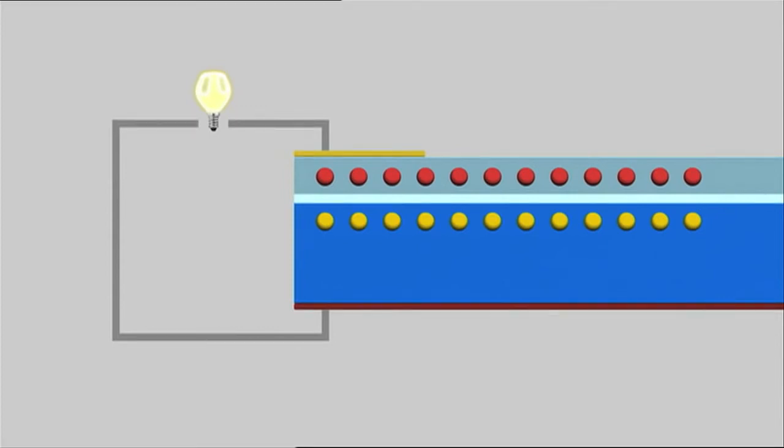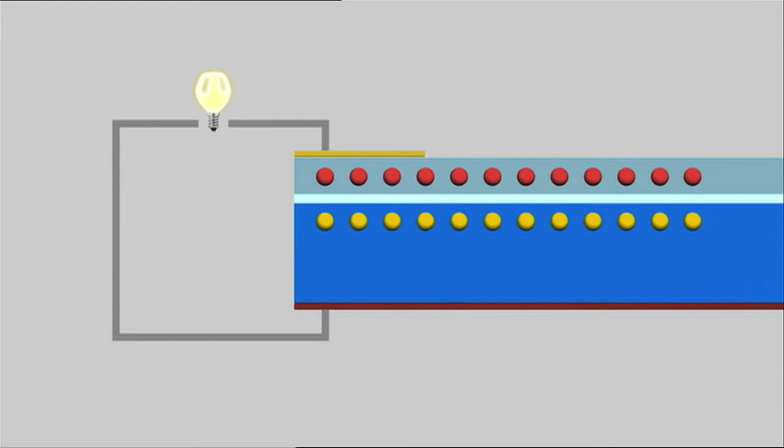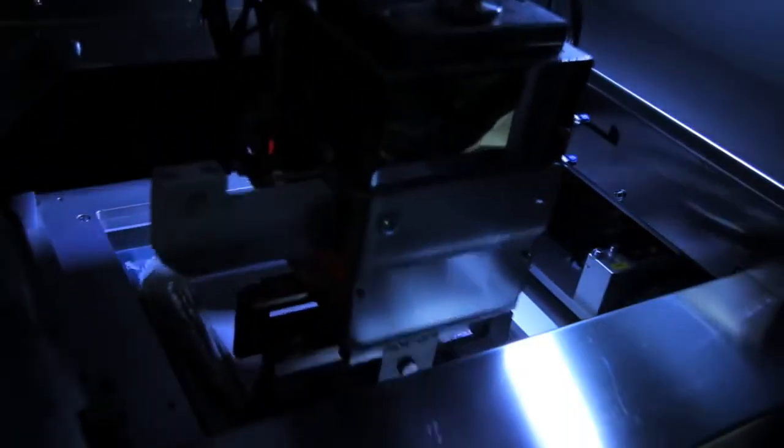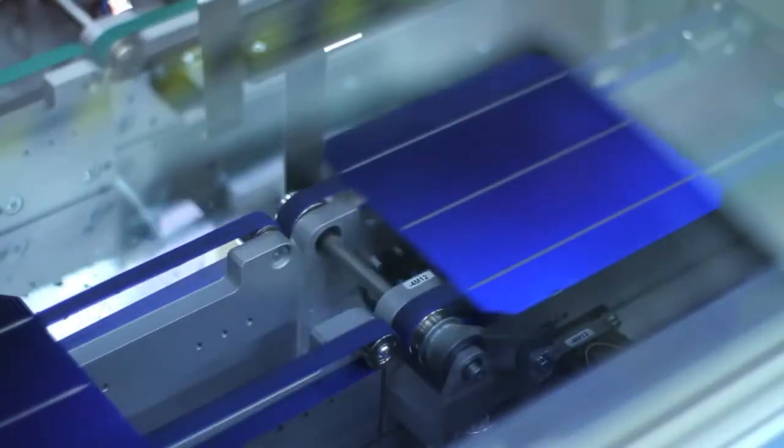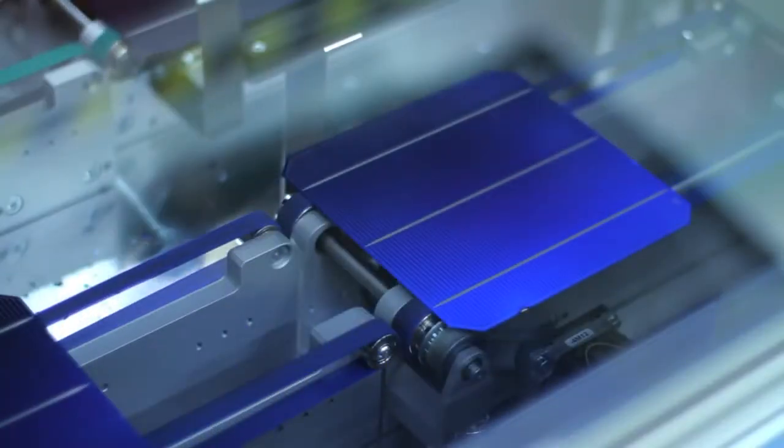But how is the power that is generated in the individual cells transported? A stamp presses a silver alloy onto the front of the cells. This creates the typical grid pattern. This silver coating ensures that the power can be transported later on.